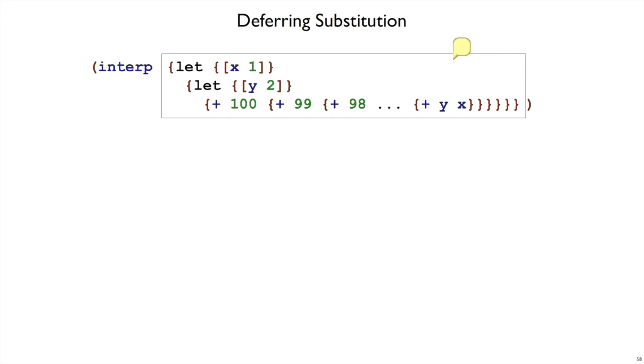Instead of actually doing it right away, we will defer the substitutions. We will have every expression with a little bubble attached to it to say what are the things that I would have replaced by now, or should have replaced by now. When we start out with an expression, we haven't done any substitutions, so the bubble is empty here.